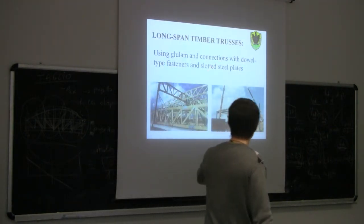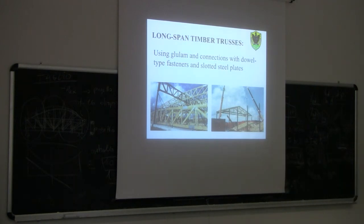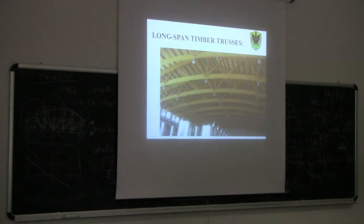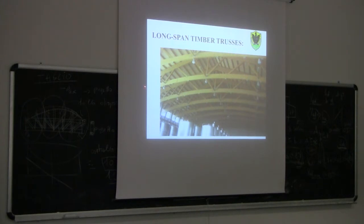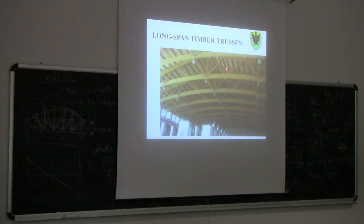For long-span timber trusses, we usually use glue-laminated timber in connection with dowel-type fasteners and steel plates. There are different possibilities. One nice example shows a pitched chamber truss system with an upper cord and a lower cord made of glulam, with very slender diagonal members. In some members, the timber is replaced by steel rods.